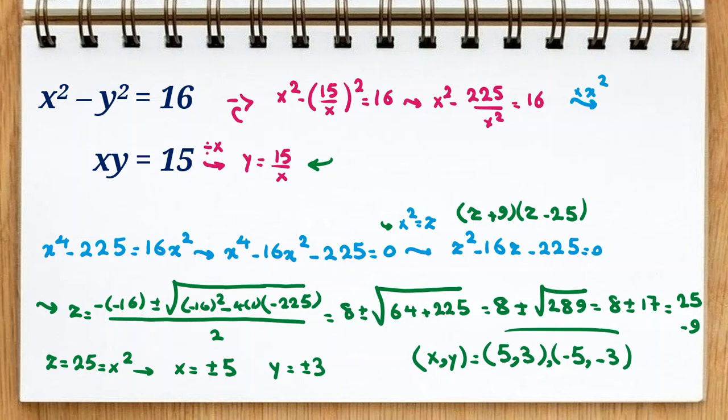Two answers. And let's check these two answers: x squared minus y squared, 25 minus 9 is 16. xy is 15. Okay, you could also try first picking numbers and reach this answer, but you should prove that there is no other answer except these answers.